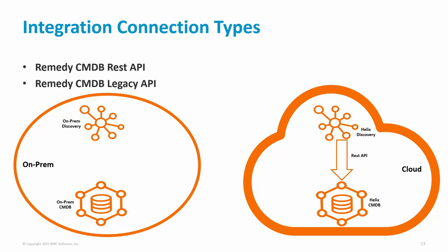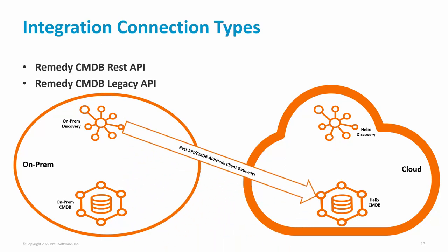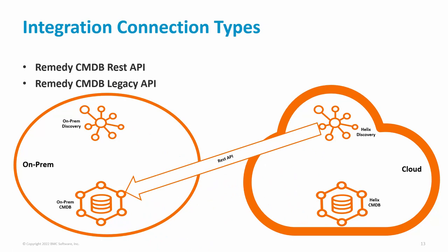The third possibility is that you have BMC Discovery deployed on-premises while the CMDB is deployed in BMC Helix. In that case, you can use REST API as well as CMDB API. To use REST API, you can either provide internet access on the Discovery appliance or, when creating the CMDB connection, add HTTP proxy details so that the appliance can access the Helix CMDB through REST API. If you don't want to use REST API to connect on-premises Discovery to Helix CMDB, you can use the CMDB legacy API with a utility called Helix Client Gateway. The fourth possibility is Helix Discovery with CMDB running on-premises, where the only available option is REST API, which requires exposing your CMDB REST API over the internet.